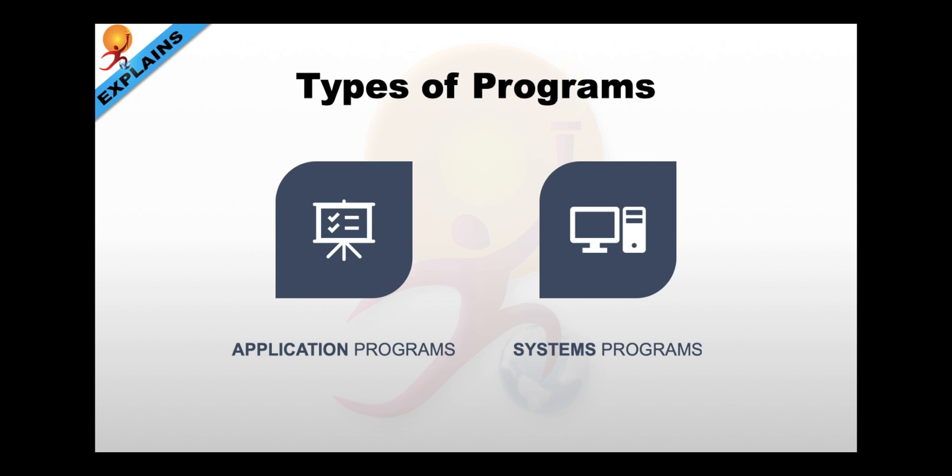Now speaking of programs, there are two categories. One is application programs and is system programs. Application programs usually are called just applications. These are the programs that people use to get their specific work done. Like writing letters, playing games, surfing the internet etc.